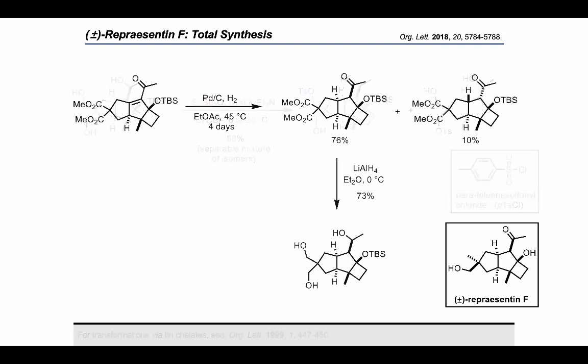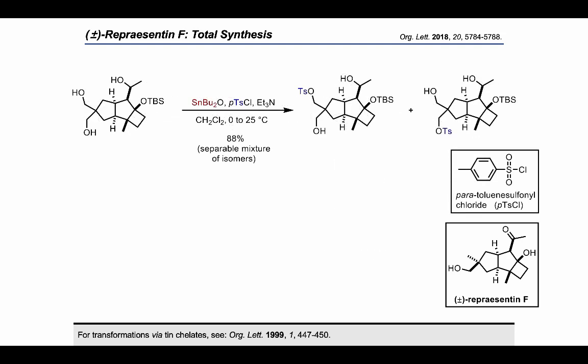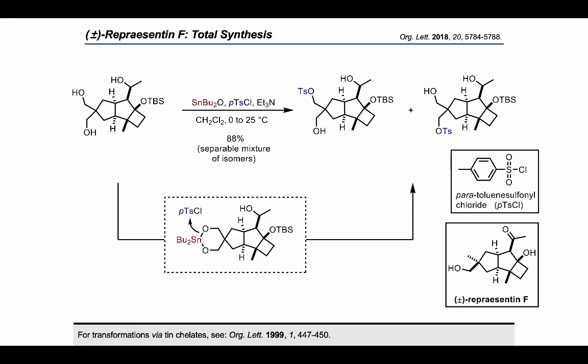The desymmetrization of the primary alcohols was achieved by selective tosylation using catalytic dibutyltin oxide, affording the corresponding monotosylated products in good yields. This transformation is suggested to take place via the formation of a six-membered chelate intermediate.